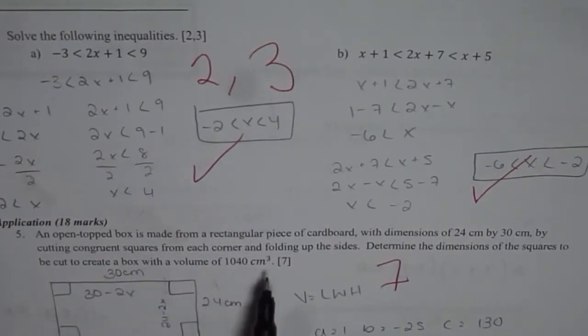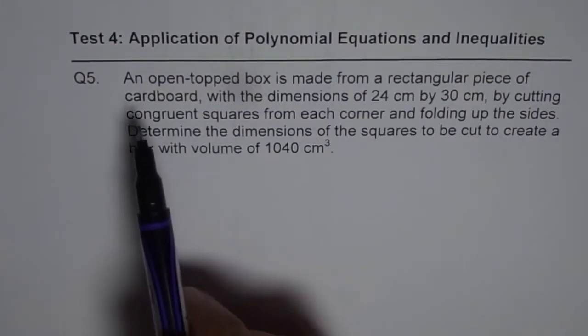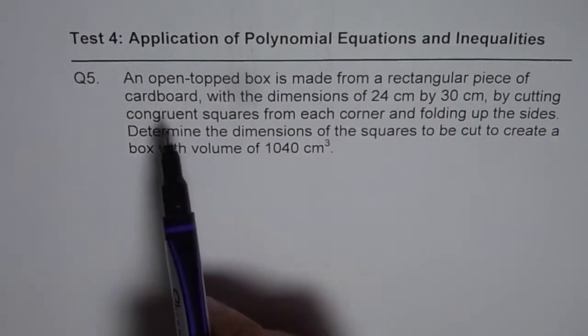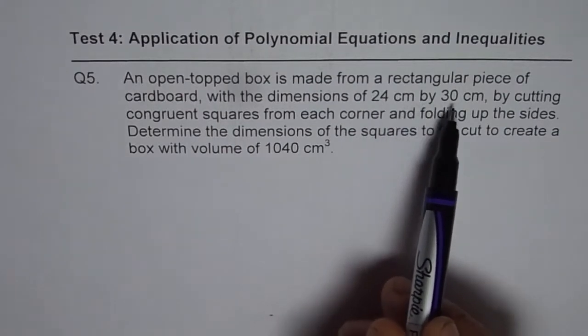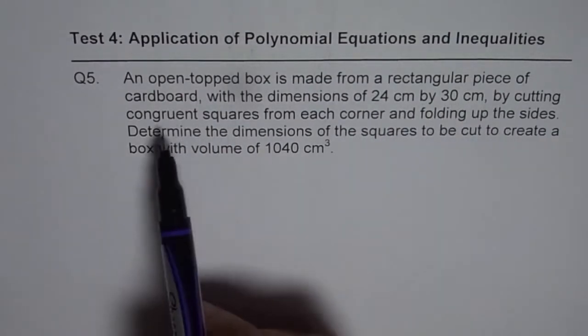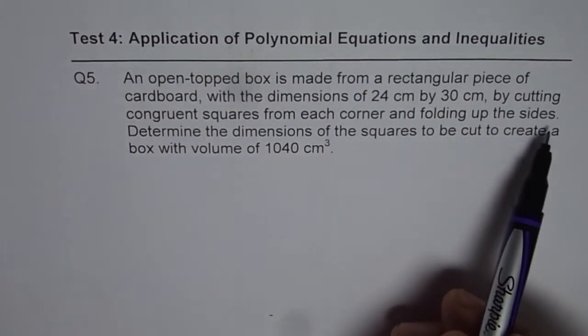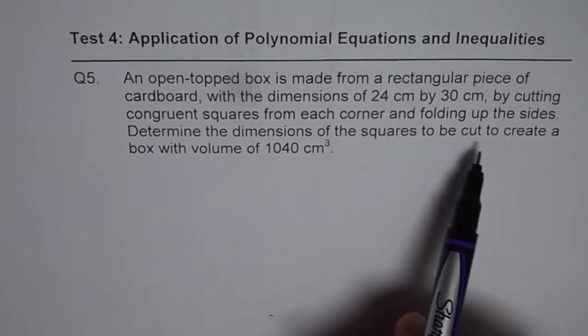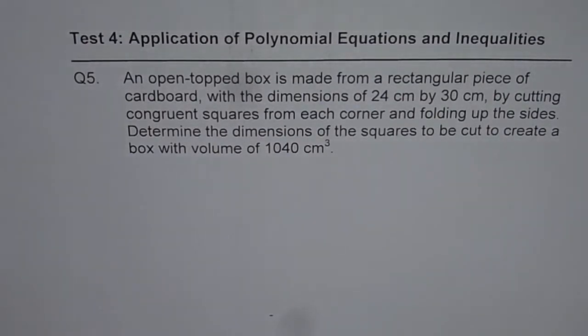Now, this question here is of 7 marks. Let's look into this question in details. The question is, an open top box is made from a rectangular piece of cardboard with the dimensions of 24 cm by 30 cm by cutting congruent squares from each corner and folding up the sides. Let's determine the dimensions of the squares to be cut to create a box with the volume of 1040 cm cubed.